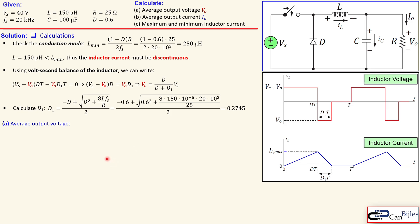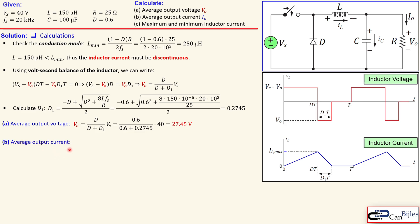Now we calculate the average output voltage using the derived formula with d and d1. Substituting all known values gives Vo = 27.45 volts. Previously in continuous current mode we had 24 volts, so the output voltage has increased in discontinuous mode — a notable change. For the output current, using Ohm's law (Vo / R) gives a larger current of 1.098 amps.